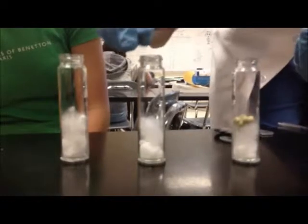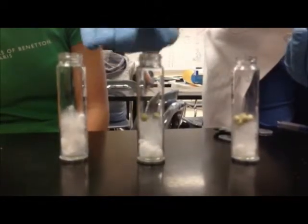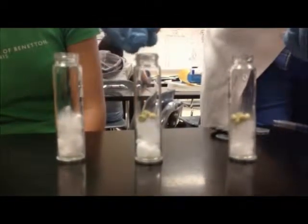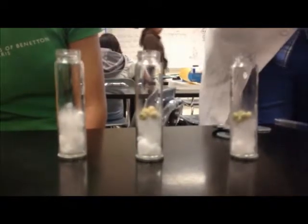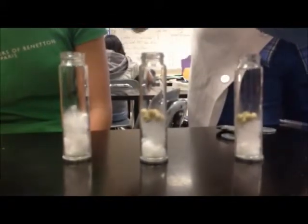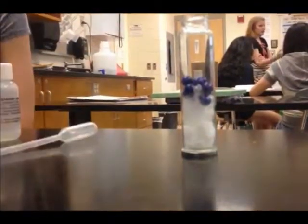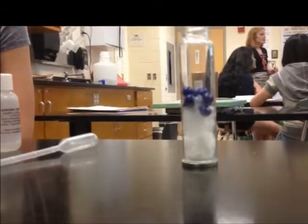Then we put each of the 5 milliliters of peas from each molarity solution into a different respirometer to serve as a way to measure the respiration of each of these different peas in different solutions. Then we add 5 milliliters of beads to one respirometer to serve as a control in this experiment.